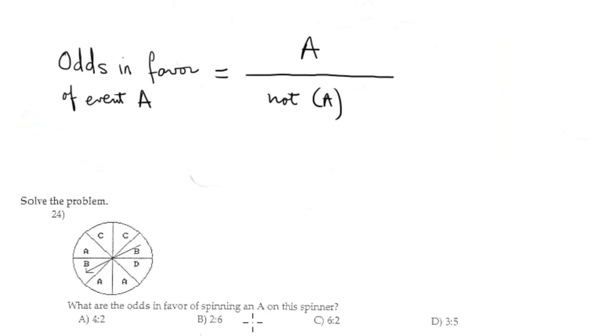Now, what are the odds in favor? In the spinning, how many A we have? 1, 2, 3. The odds in favor: the cardinality when the event is A is 3, over how many non-A we have. The odds in favor is 3 over 5.